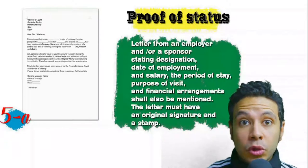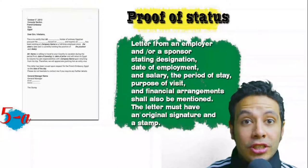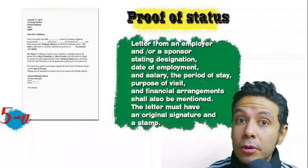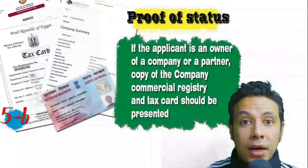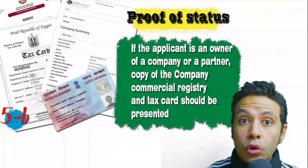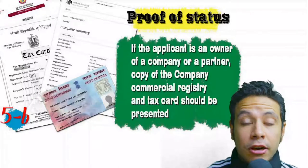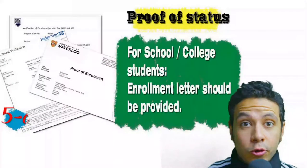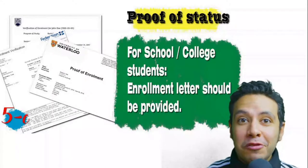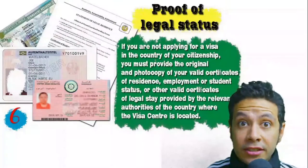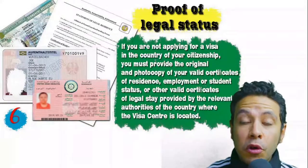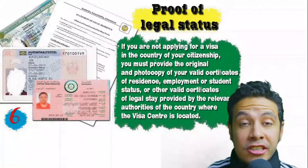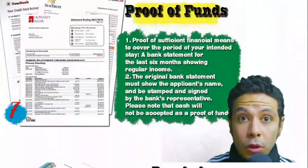In most visa application processes you will need to provide a proof of status. If you are an employee, provide a letter from your employer or HR department mentioning your name, work details, salary, address, and contact numbers — with an original signature and stamp. If you own a business, present your commercial registry and tax card. If you are a student, provide an enrollment letter from your school or university. If applying from a country other than your own, you will need a certificate of legal residence or a valid residence visa.